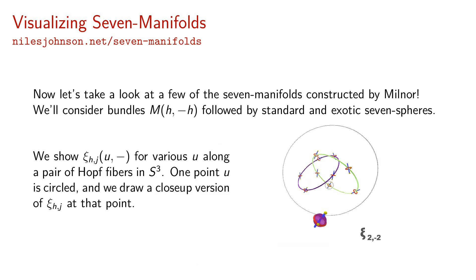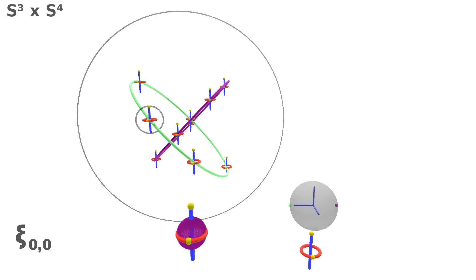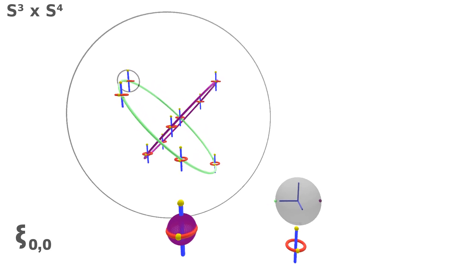Now let's take a look at a few of the seven manifolds constructed by Milnor. We'll consider bundles M(H, -H), followed by the standard and exotic seven-spheres. We show C-H-J of U for various U along a pair of Hopf fibers in S3. One point U is circled and we draw a close-up version of C-H-J at that point.